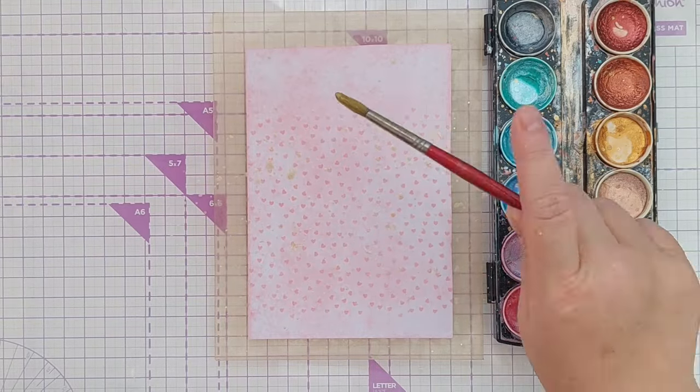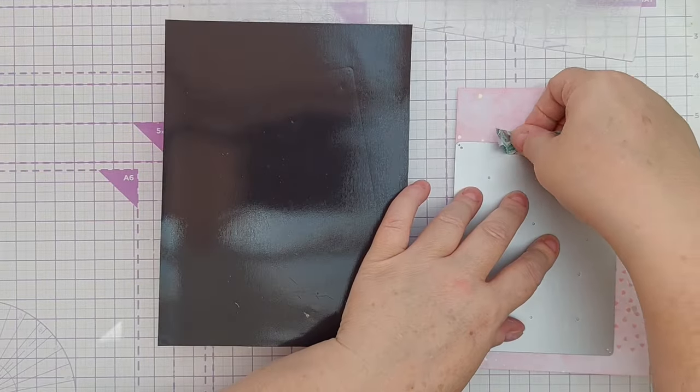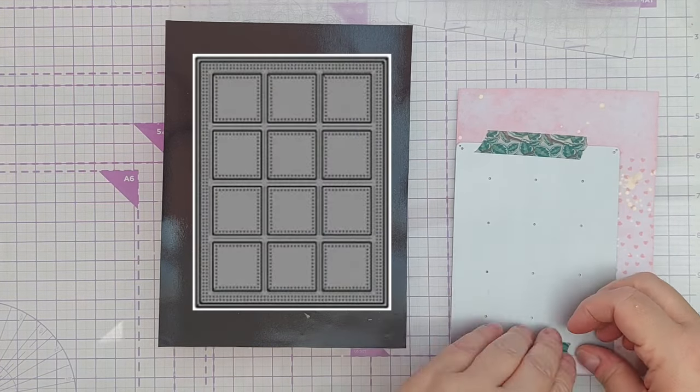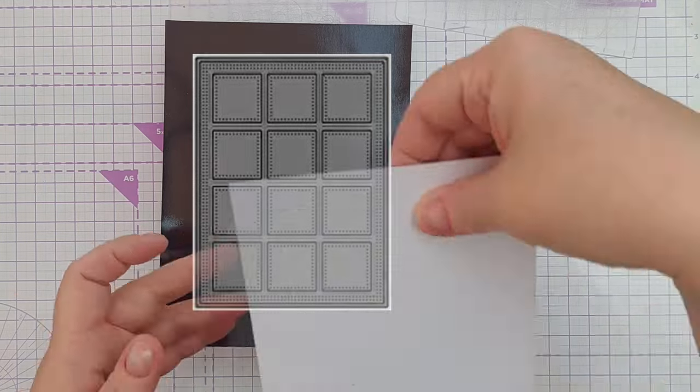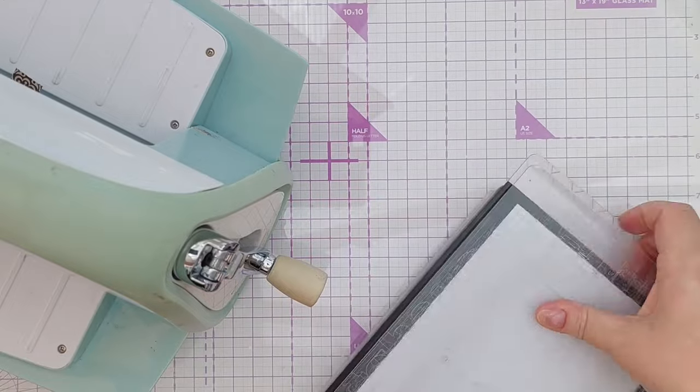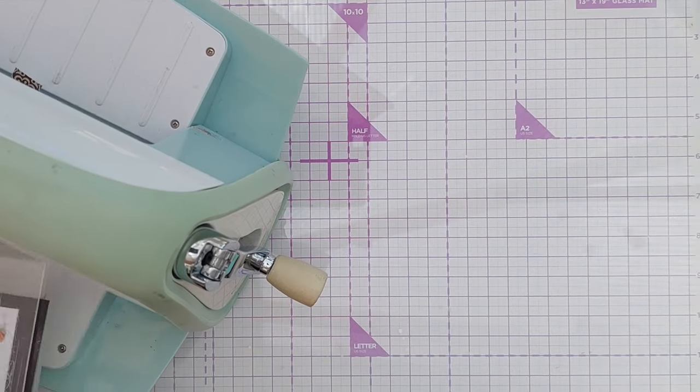Once my spatters were dry I used a cover plate die to cut into my mixed media piece. The die gives a frame plus 12 stitched squares. I also used the die to cut some smooth white card. You'll see why in a tick.